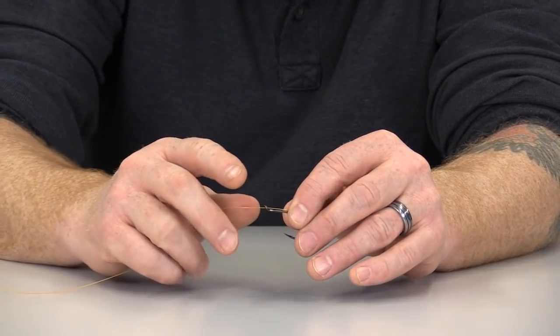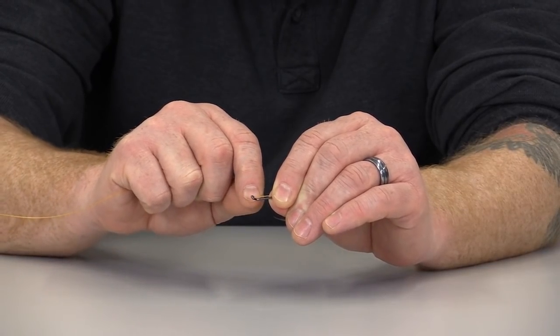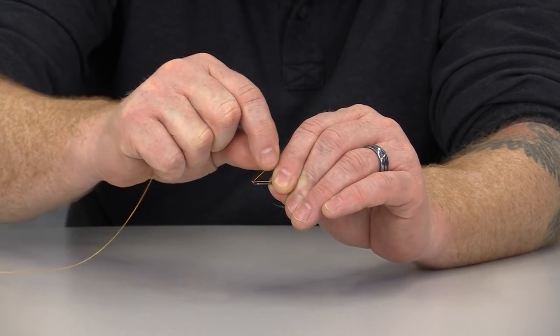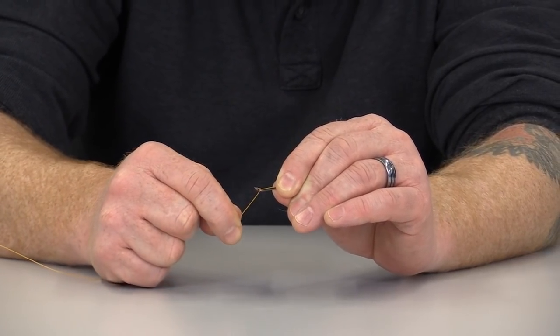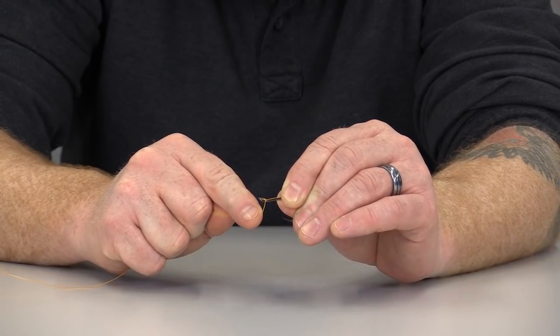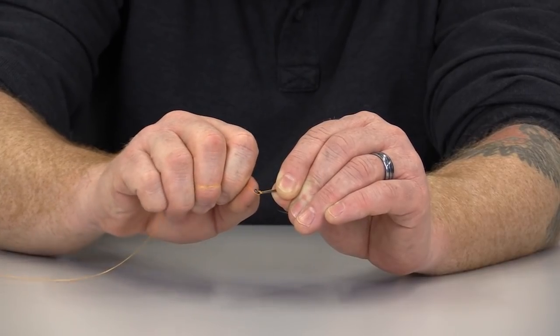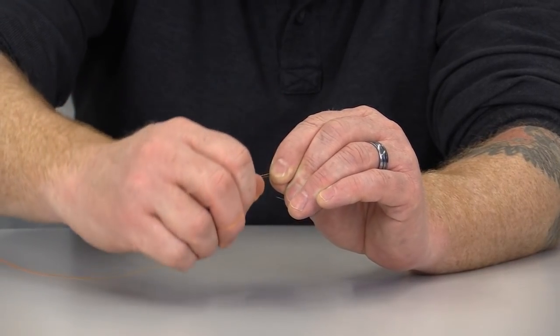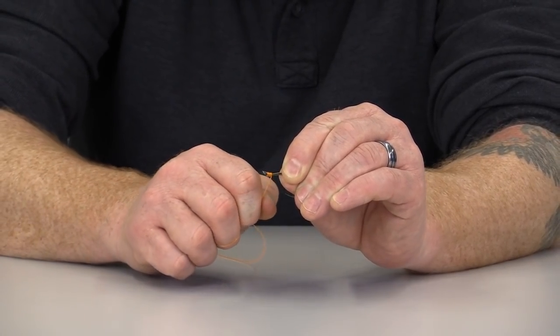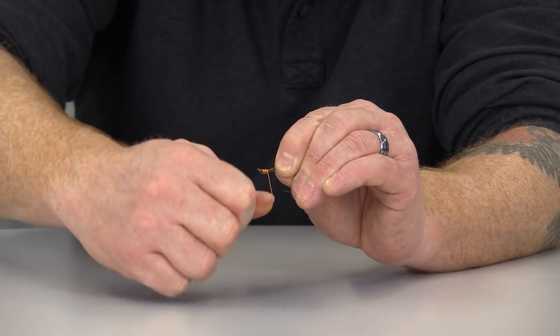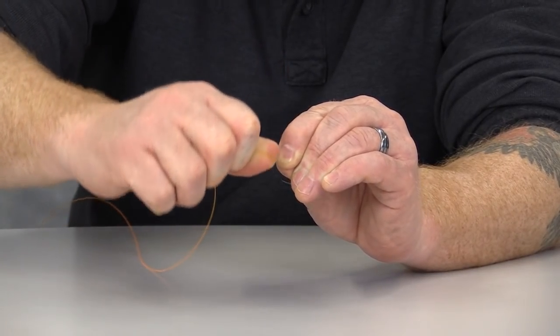We're going to use our right hand. We're going to begin maintaining control of that leader section. We're going to begin wrapping a section that falls just behind the eye of the hook. That's my first wrap. I'm going to continue this wrapping portion with 9 or 10 additional wraps. And we want to make sure that each wrap falls right next to the other one. We never want to wrap over another wrap.